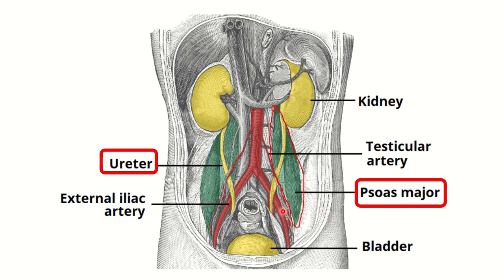If we look carefully, we can see a tubular structure — this yellow structure. This structure arises from the kidney and descends downward. We can see it in the lower part of the psoas major muscle. It is present along almost all of the psoas major but in the lower part it crosses medially. This yellow structure is the ureter, and the ureter finally opens into the urinary bladder.